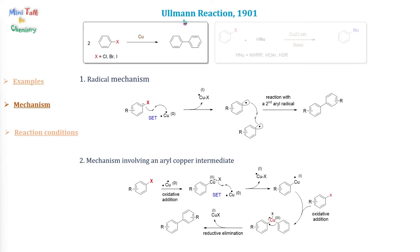The mechanism of the Ullmann reaction is not completely understood. There are two popular mechanisms. The first is a radical mechanism involving single electron transfer from the copper metal to the aryl halide, forming an aryl radical. Two aryl radicals then react and form the final biaryl product.